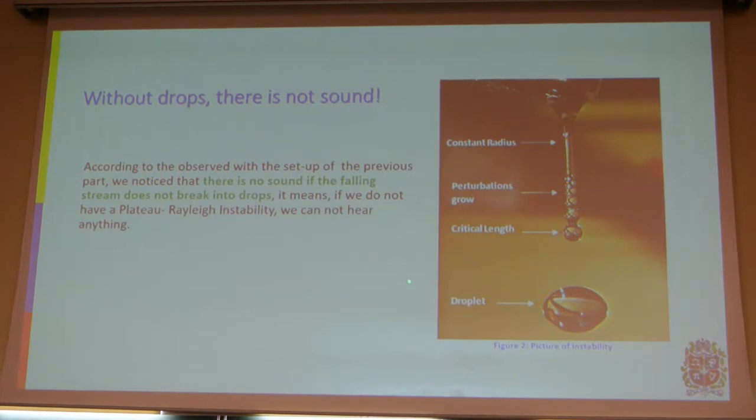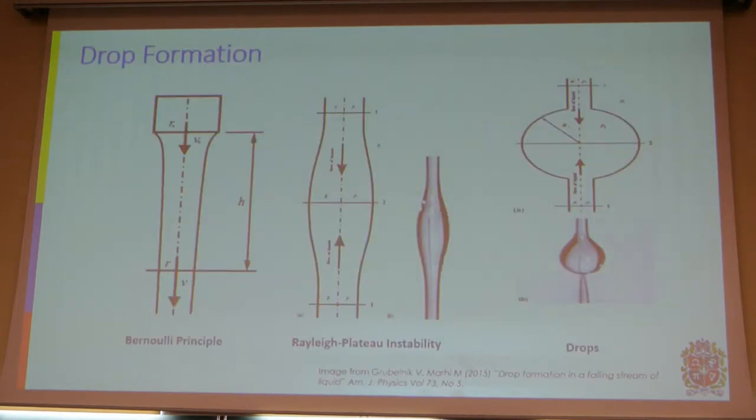Here is a summary of what's happening. Here is the fluid, a stream falling with constant radius. We take percent slope formation, and finally we have drops.